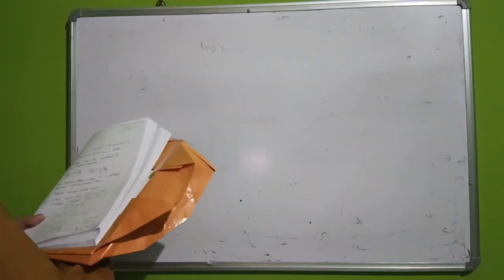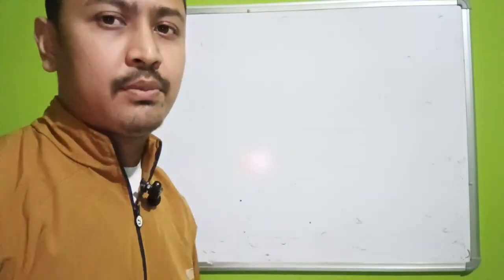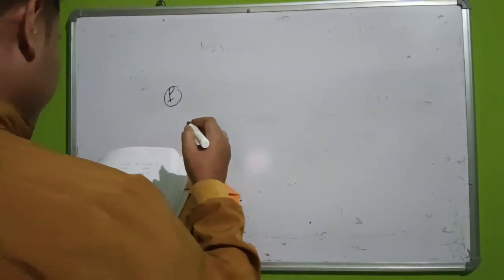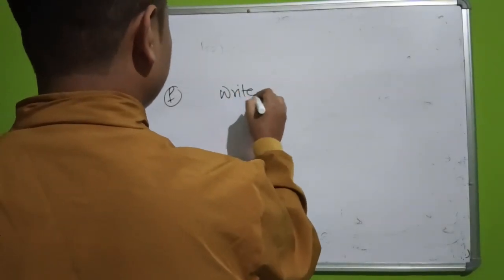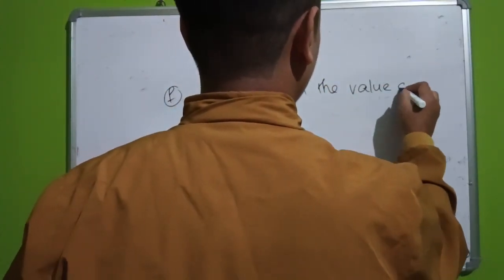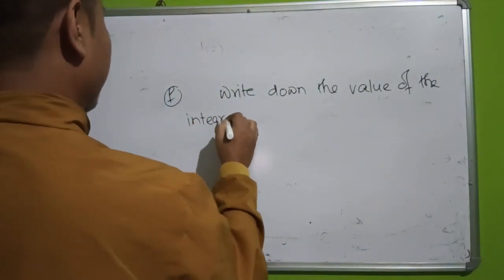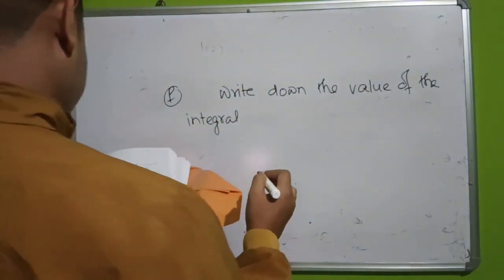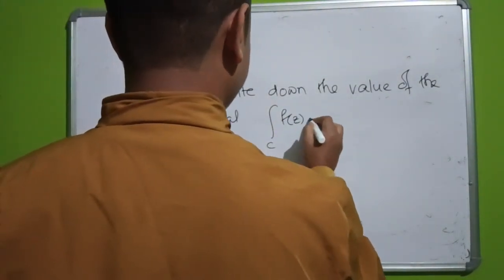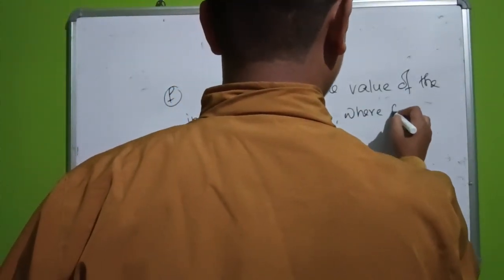Next problem: define a simple closed curve. The definition will be given. After that, the next problem is: write down the value of the integral — find the value of the integral over a closed curve C of f(z) dz.